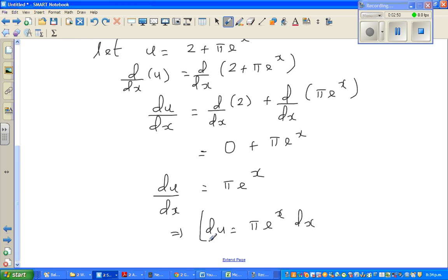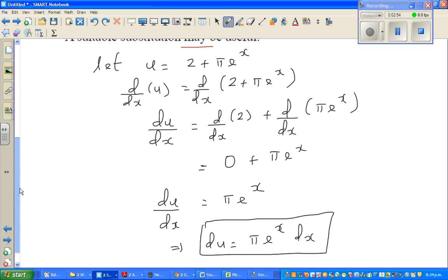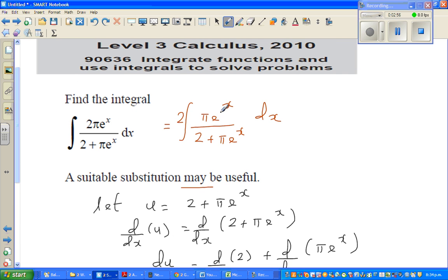This is what is mind-blowing. This whole complicated form, this whole thing can be written now as du. So this now you can write as du, and this you have already let as u.